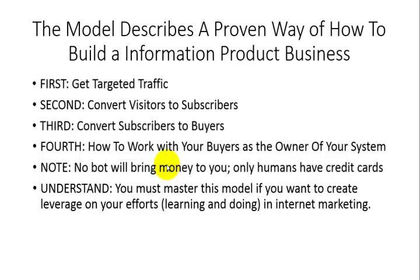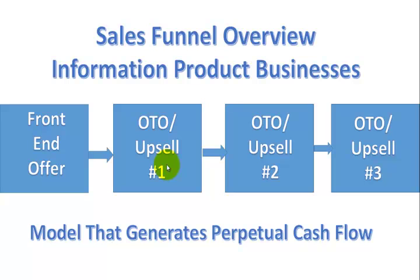I want to give you a visual of what the model actually looks like. This is the sales funnel overview that we're going to be talking about in this course, and you'll notice that it is simple. It's based on a front-end offer, then an upsell or an OTO, an upsell and an OTO after that, and an upsell and an OTO after that. You may notice that you don't see the word downsell — I'm going to be explaining how that works inside of this course. When you generate targeted traffic to this model, it will generate perpetual cash flow.